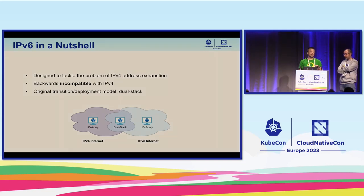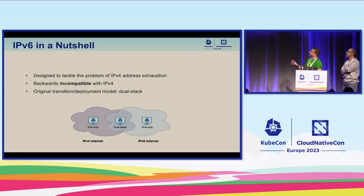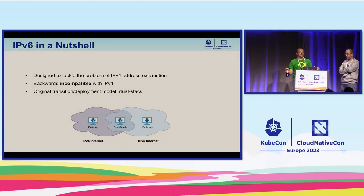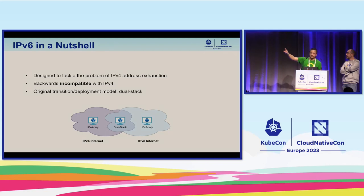An important aspect of IPv6 that has affected its deployment is that it is backwards incompatible with IPv4. You might expect two versions of the same protocol to interoperate, but they don't — it's a completely different protocol that could have been named anything else. Without a flag day, you end up with IPv4-only systems on the IPv4 internet, IPv6-only systems on the IPv6 internet, and dual-stack systems that support both protocols and can participate in both.